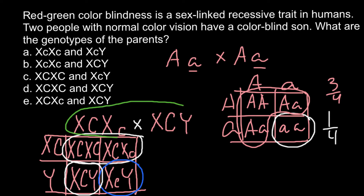Now let us look at which answer is correct. Answer A: the female would be affected because both alleles are recessive — but we are told the mother and father are not affected. Answer B: the father would also be affected. Answer C: the mother would have both normal alleles, but the father's phenotype would be affected because his single X chromosome has the recessive allele. Such a cross would produce all heterozygous daughters whose phenotype would be normal or they would be carriers.